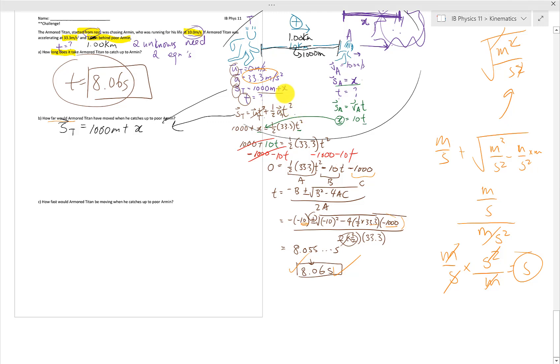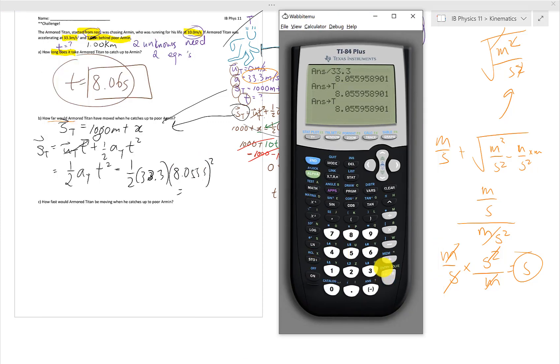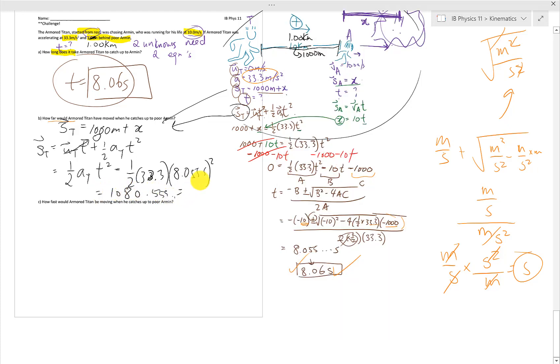So this whole thing is ST is equal to the Titan's initial velocity times time plus 1/2 his acceleration T squared. And his U, his initial velocity is 0, so we can just eliminate that. So really, how much he's traveled is 1/2 his acceleration times the time that we found squared. Substituting all that in, we get, his time is 8.06, and of course, I'm going to keep all the digits. We get 1,080.559, and rounding up to 3 sig figs, that's roughly about 1,080 meters.